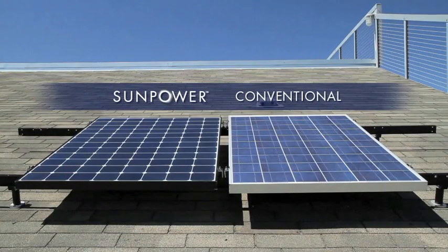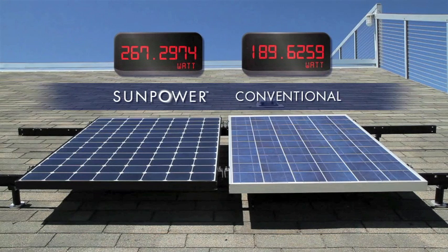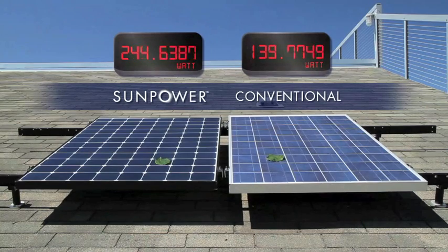Let's look at the power output of two panels under shading. In this experiment, SunPower panels are more efficient than conventional panels to begin with, so they produce more power. Now let's see what happens when we shade a small portion of the panel.